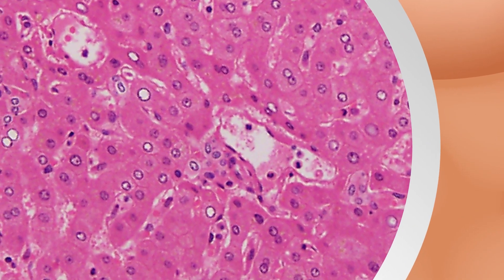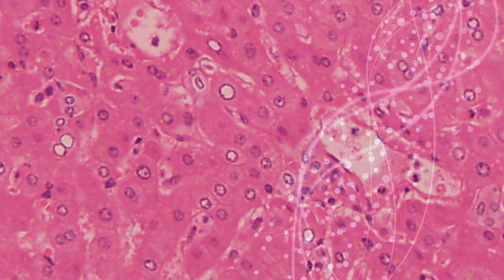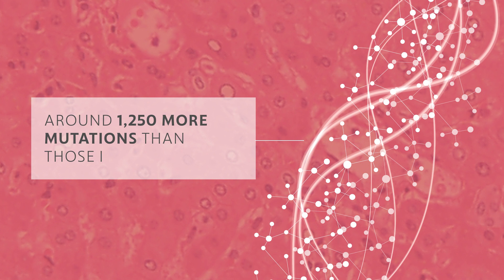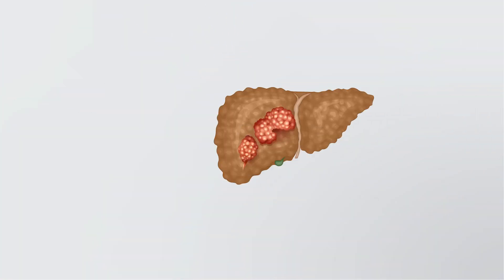They found that hepatocytes had an increased DNA mutation rate. On average, the hepatocytes in diseased livers had around 1,250 more mutations than those in normal livers. Several genes were mutated again and again in the unhealthy livers.